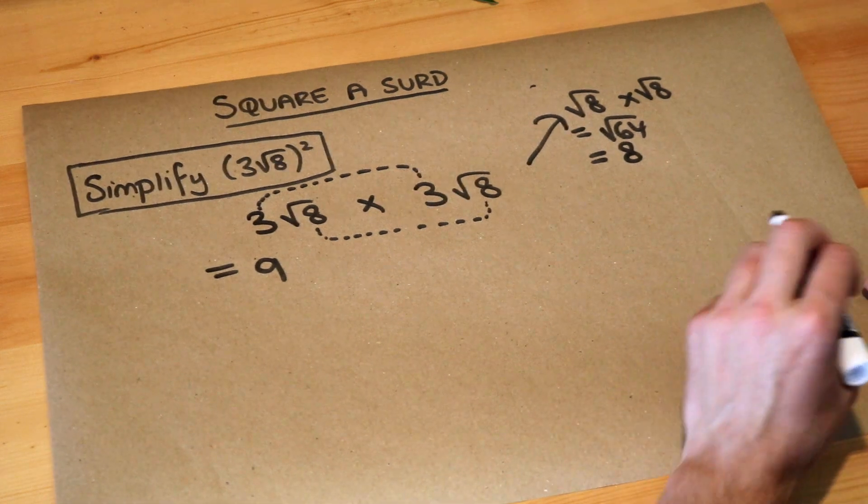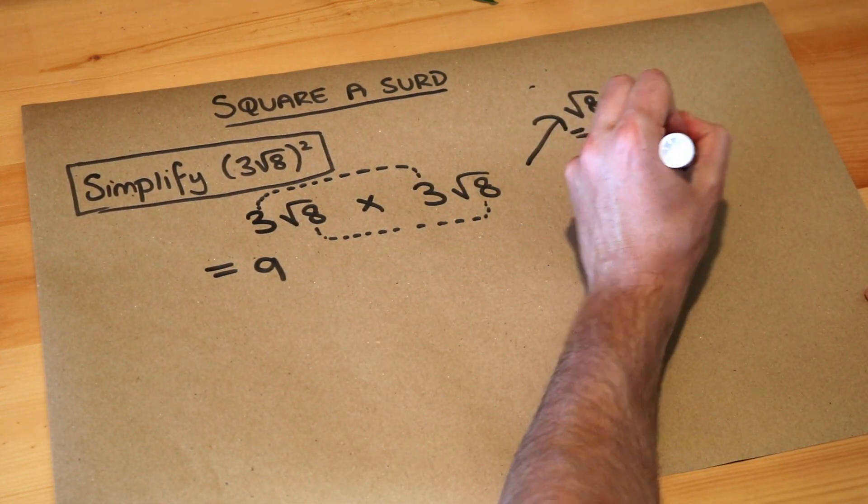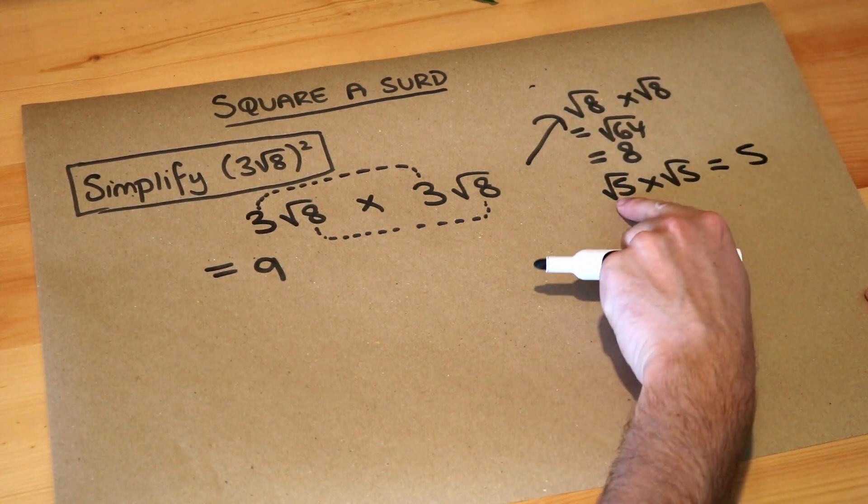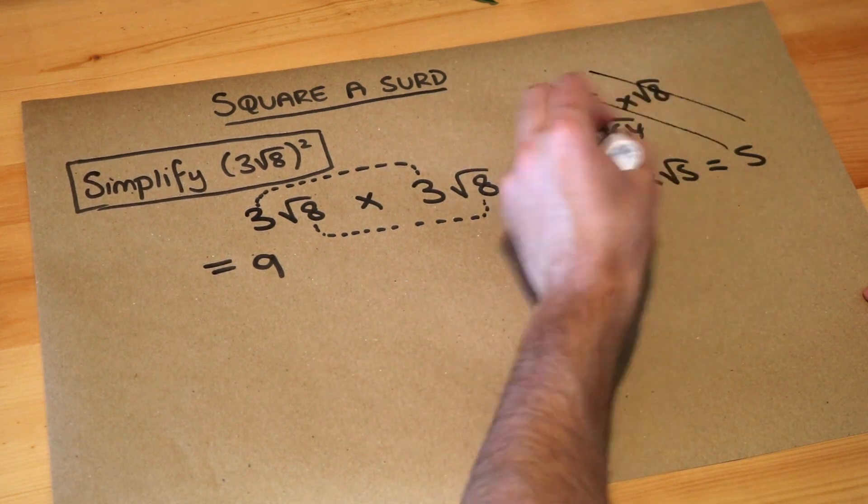So we just get 8, and in general if I had to say like root 5 times root 5, we know that's going to be 5. So if you times root of something by itself it just gets rid of the square root.